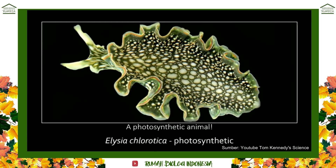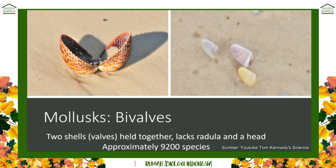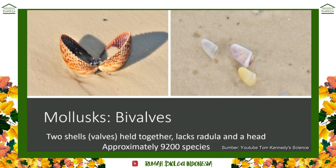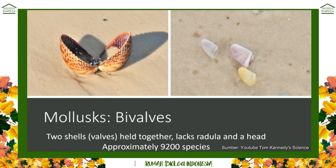Our next group is the bivalves. 'Bi' means two, 'valve' means shell — so bivalves have two shells. On the left here is an Atlantic cockle and on the right is a very small coquina. Along the Atlantic coast and Florida beaches you'll find Atlantic cockles everywhere. These animals lack a head and lack a radula, and there are about 9,200 species of bivalves worldwide.